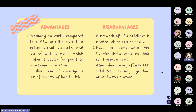The advantages: the proximity to Earth compared to GEO satellites gives LEO better signal strength and less of a time delay, which makes it better for point-to-point communication. LEO also has a smaller area of coverage, which means less waste of bandwidth. For the disadvantages: first, a network of LEO satellites is needed, which can be costly. And we have to compensate for Doppler shifts because of the relative movement.